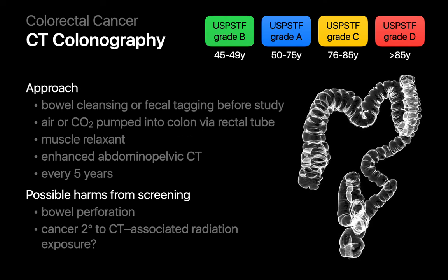CT colonography is a more modern image-based colorectal screening exam. With CT colonography, the patient completes a bowel cleanse before the day of their CT. Once they have arrived and are on the CT scanning table, a tube is inserted into the rectum through which air or carbon dioxide is gently pumped and the colon inflated, and then an enhanced abdominal pelvic CT is performed. Sometimes a muscle relaxant is also administered. The risk of bowel perforation with CT colonography is between 0 and 6 incidents per 10,000 procedures. The cancer-causing effects from CT colonography-associated radiation exposure have not been well quantified. Colorectal cancer screening using CT colonography is generally performed at 5-year intervals and is currently recommended by the USPSTF for average-risk asymptomatic patients 45 to 75 years of age.